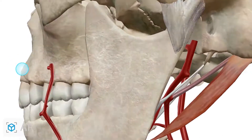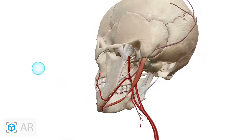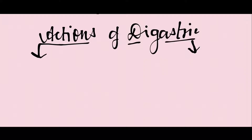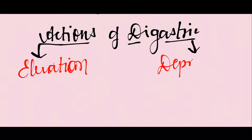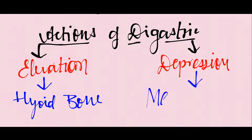The digastric muscle performs two actions: elevation of the hyoid bone and depression of the mandible. That completes the digastric muscle.